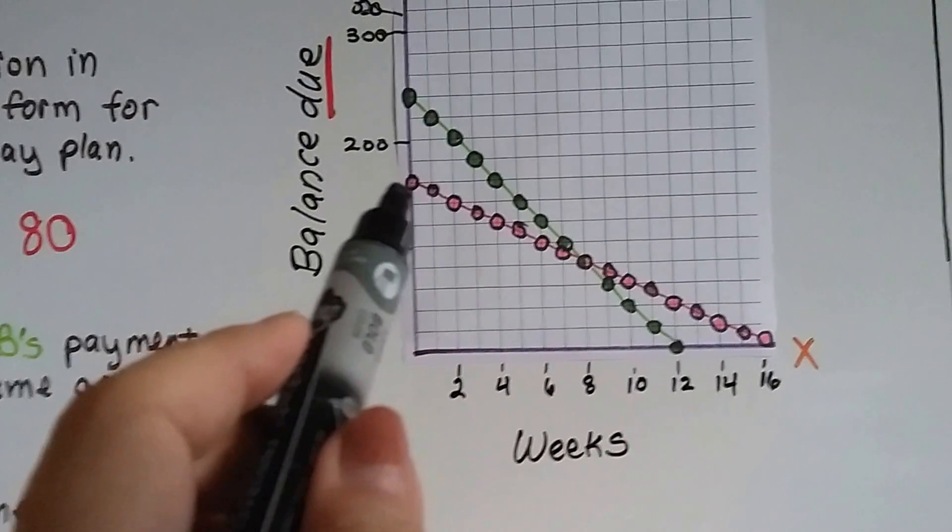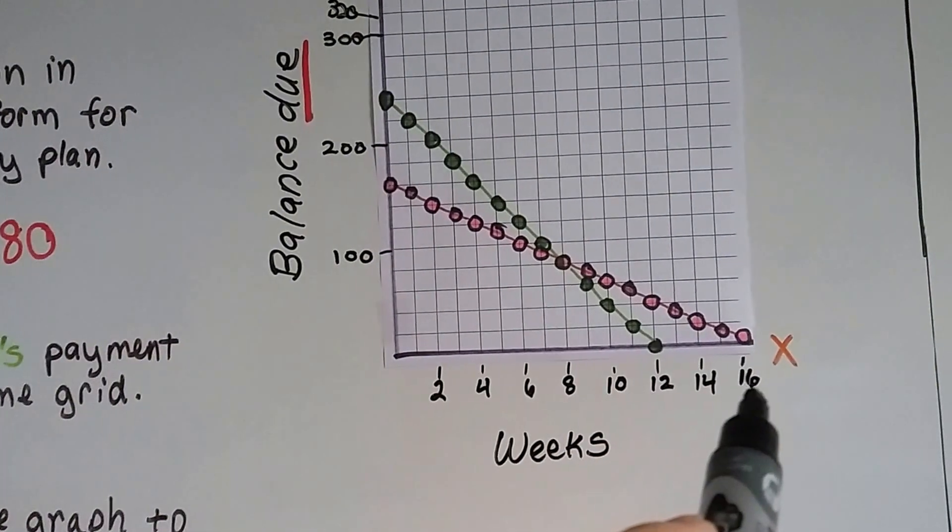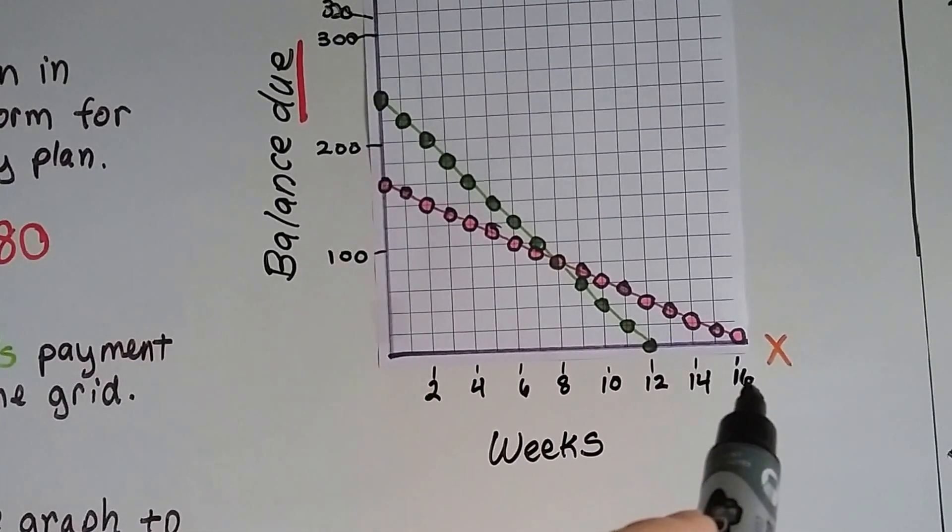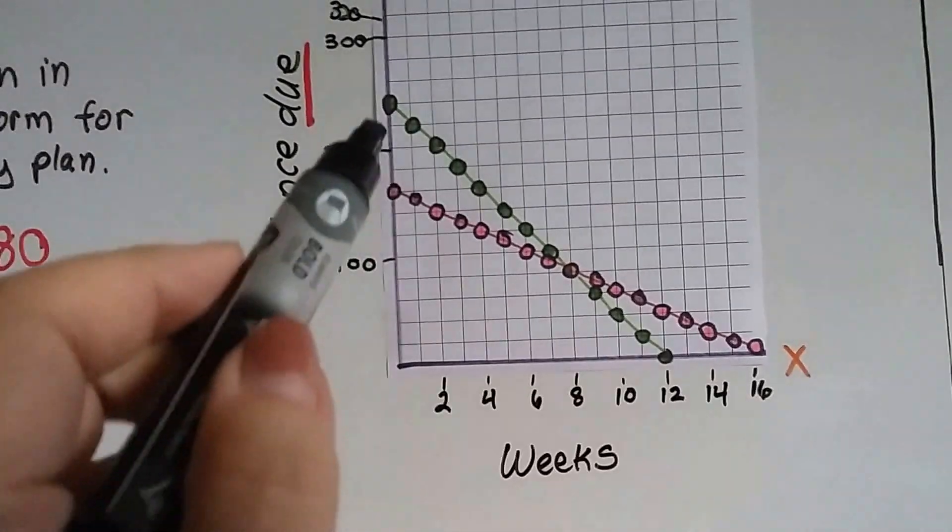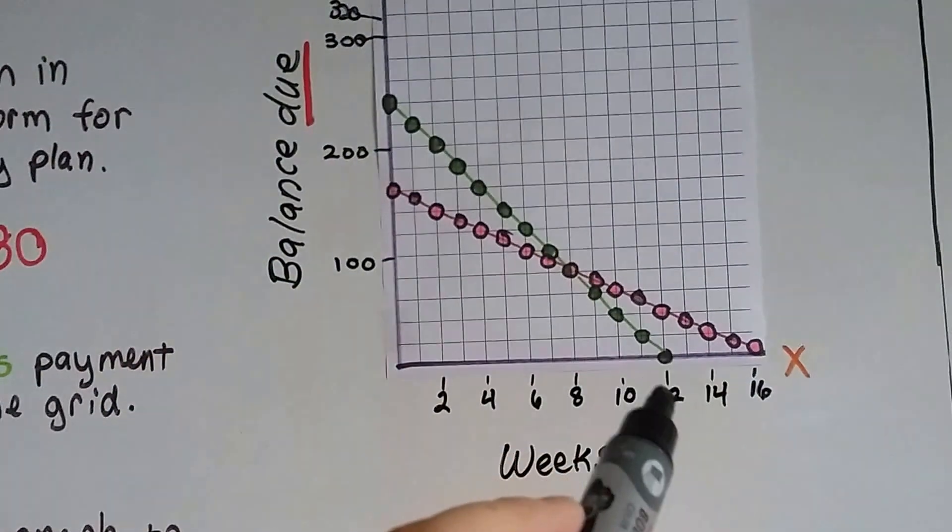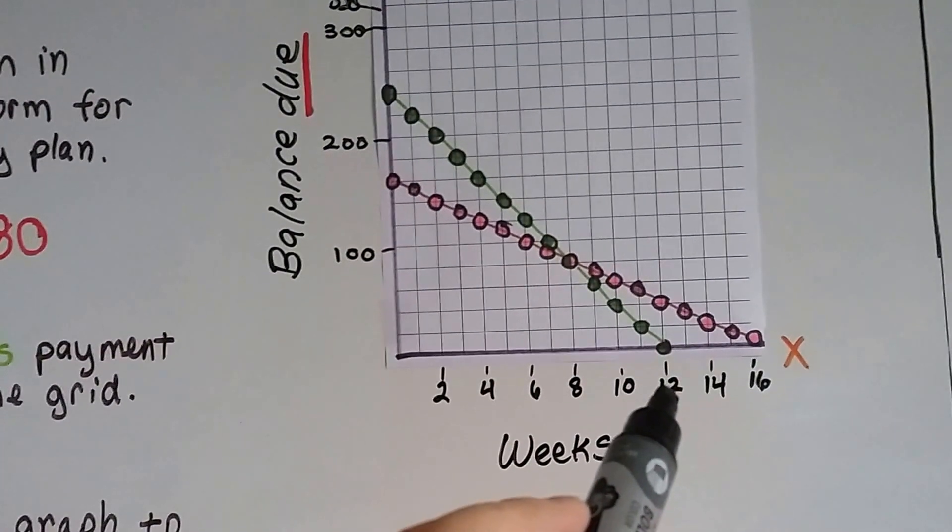We can see from this that store A, the pink one, is not going to get paid off for 16 weeks. That's almost four months. Where store B's plan, the green one, is going to be paid off in 12 weeks. That's around three months.